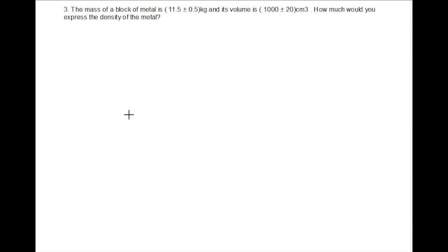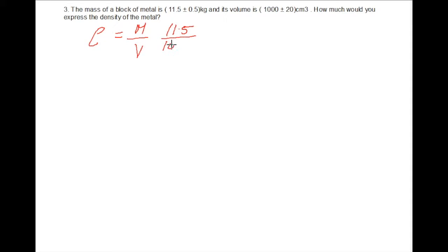Moving on to the third question: find the maximum fractional uncertainty of the density of a metal. The mass is 11.5 ± 0.5 kg and the volume is 1000 ± 20 cm³. The density equals mass divided by volume: 11.5 ÷ 1000 = 1.15 × 10⁻² kg/cm³.